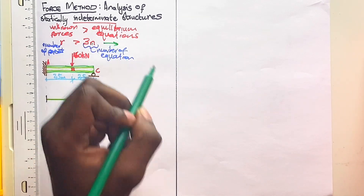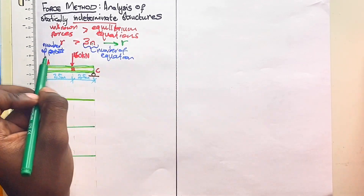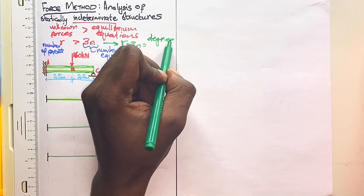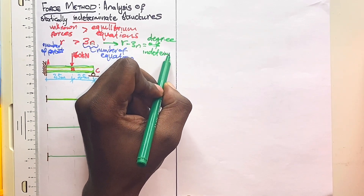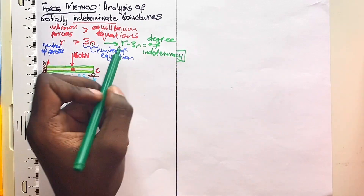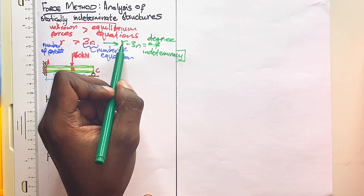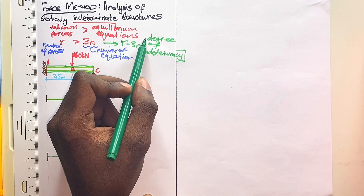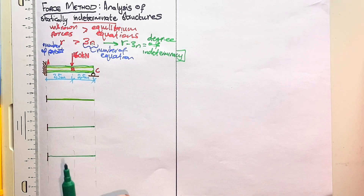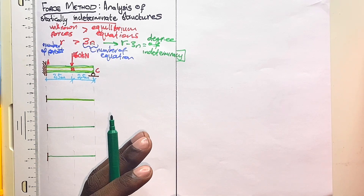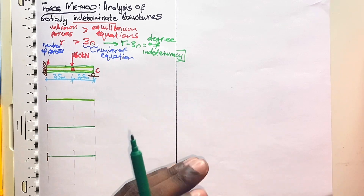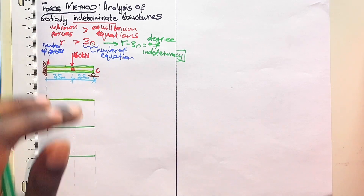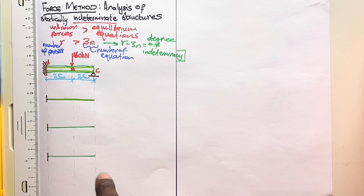If you take the number of unknown forces and subtract the number of equations, it gives you the degree of indeterminacy. For example, four unknown forces minus three equilibrium equations equals one — so you have one degree of indeterminacy, meaning you are missing one extra equation to find all your unknowns. To make up for that one equation, we are going to use the compatibility equations. Now let's see how the force method works.